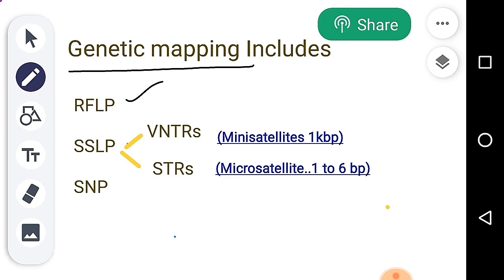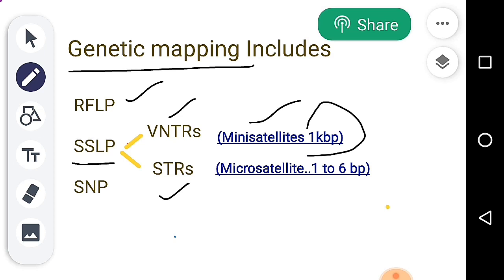There is a lot of base-pair sequence data. In simple sequence, it is polymorphism. Molecular markers are also based on polymorphism. Here we are going to look at VNTRs and STRs. VNTRs stands for Variable Number of Tandem Repeats. If you look at the base-pair size, it is around 1 kbp.